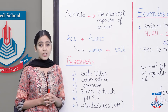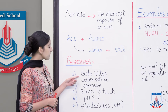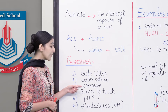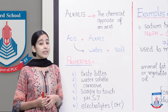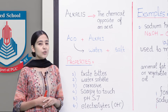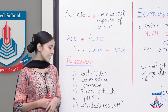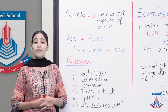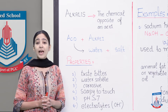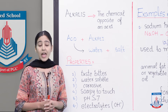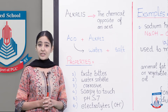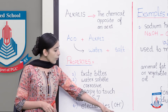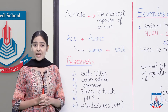Now let us discuss the properties of alkalis. They taste bitter, they are water soluble, they are corrosive like acids, and they are soapy to touch — which means they are mostly used for cleaning purposes. Alkalis have a pH greater than 7, and they are electrolytes. An electrolyte conducts electricity; in the case of an alkali solution, the ions are hydroxyl ions, OH⁻.